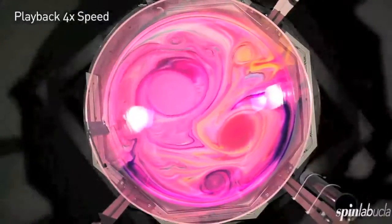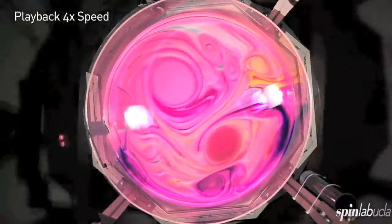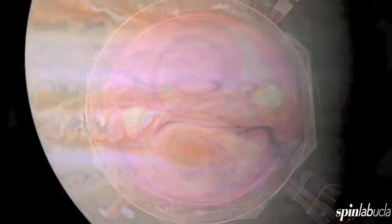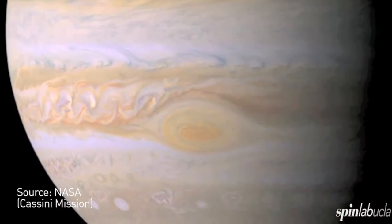You get large-scale vortices with an amazing amount of filamentary structure, a lot like what you see in images of vortices on giant planets.